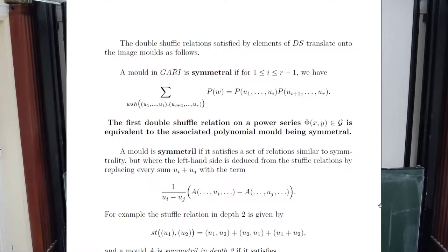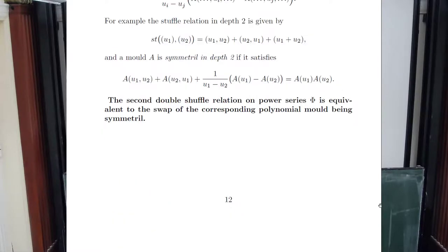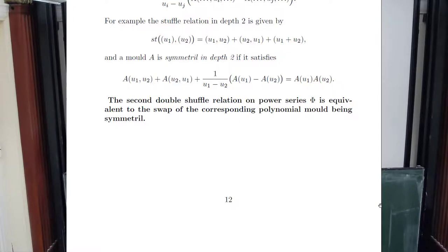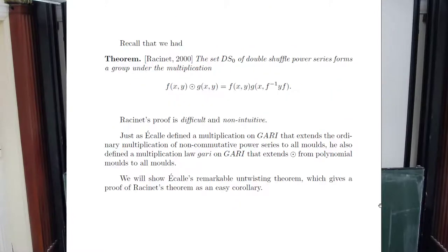The second double shuffle relation is expressed as 'symmetral-swap' in mold language—it's a little more complicated to write but very elementary. You take the stuffle locations, and the resulting symmetry property in depth 2 gives two terms for each crossing. This generalizes to every r very easily. This mold property has the following key feature: if the mold is polynomial, coming from a power series, it satisfies this if and only if the power series satisfies the second double shuffle relation. So it's called symmetral-swap. This is nothing but the reformulation of double shuffle in commutative variables.